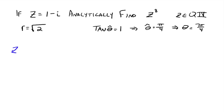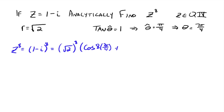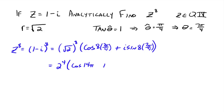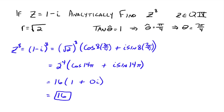Z to the eighth is the same as finding one minus i to the eighth. Since we have the trigonometric form, that's the same as R to the eighth times the cosine of eight times seven pi over four plus i sine of eight times seven pi over four, just following De Moivre's theorem. That gives us two to the fourth times the cosine of 14 pi plus i sine 14 pi, which all simplifies down to 16. So one minus i to the eighth power equals 16.